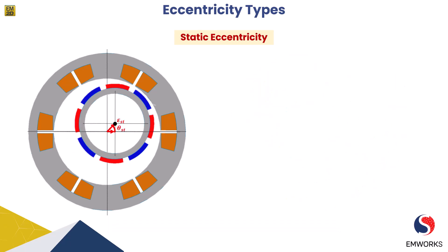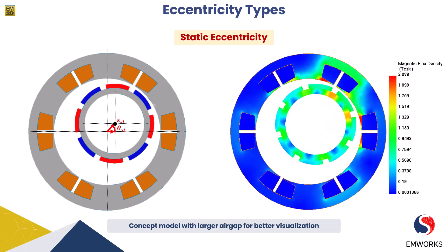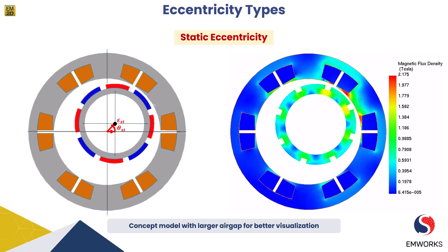Static eccentricity is characterized by a fixed displacement between the center of the rotor and the center of the stator — the rotor is off-center in a consistent manner, shifted by a fixed distance at a particular angle. This type of eccentricity often occurs due to improper assembly or misalignment during motor manufacturing or installation. Static eccentricity can lead to uneven air gaps between the rotor and the stator core, resulting in unbalanced magnetic forces and torque ripple.